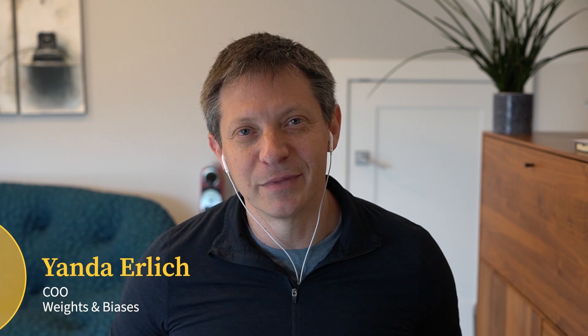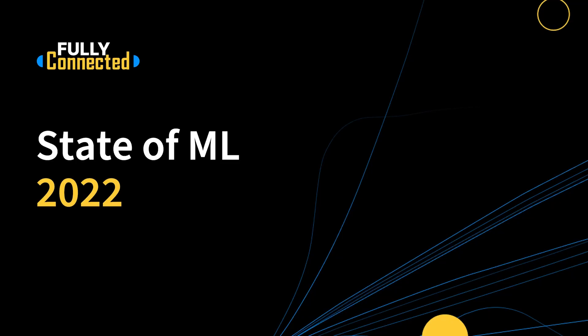Hi, everybody. My name is Jan David Ehrlich. I'm the chief operating officer at Weights and Biases. And that means I get the honor to present our first State of ML Fully Connected report, for the year that just ended, 2022.